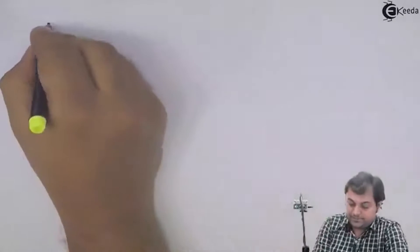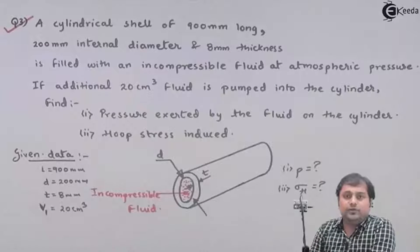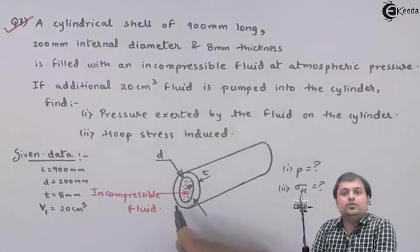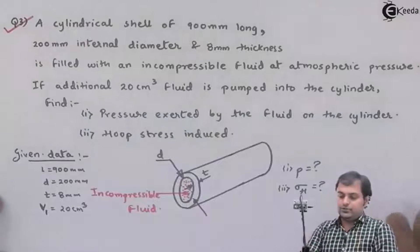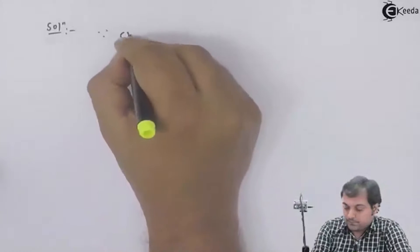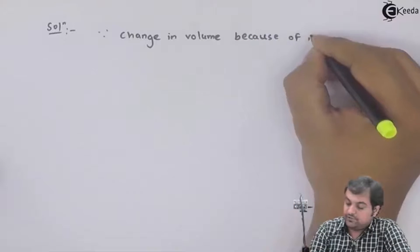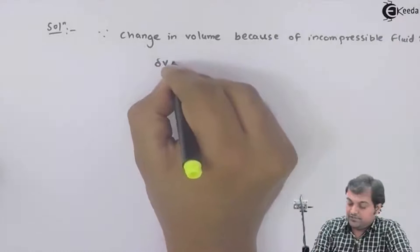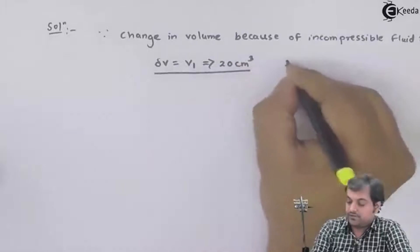Now for the solution: this cylinder is filled with incompressible fluid — we can assume it is water since the type of fluid is not mentioned. When the cylinder is filled with incompressible fluid, there are chances of the cylinder changing its volume because of the internal pressure. Since change in volume is due to the incompressible fluid, that change in volume delta V is equal to V1, which is 20 centimeter cube as given.